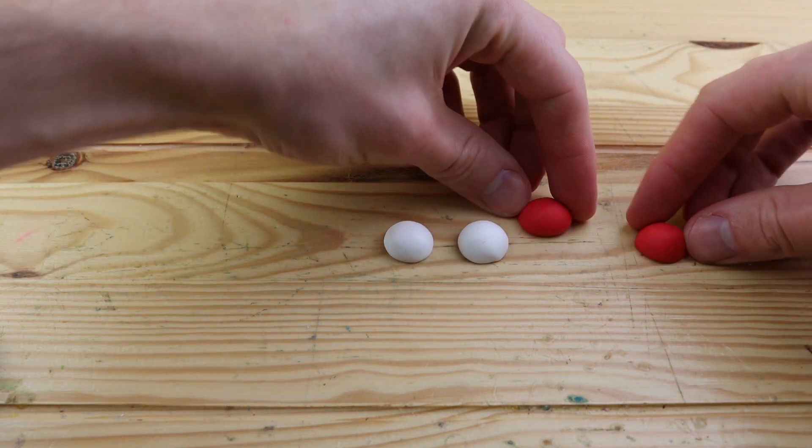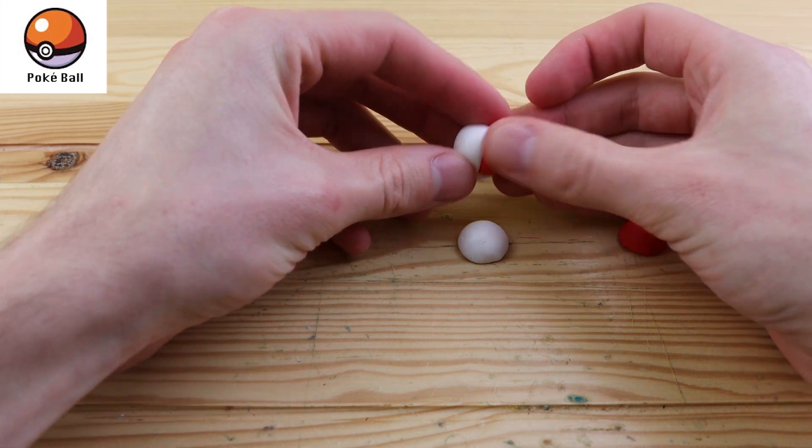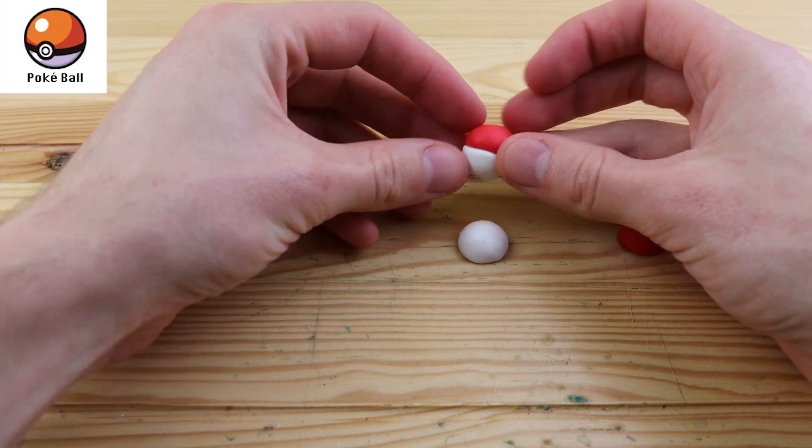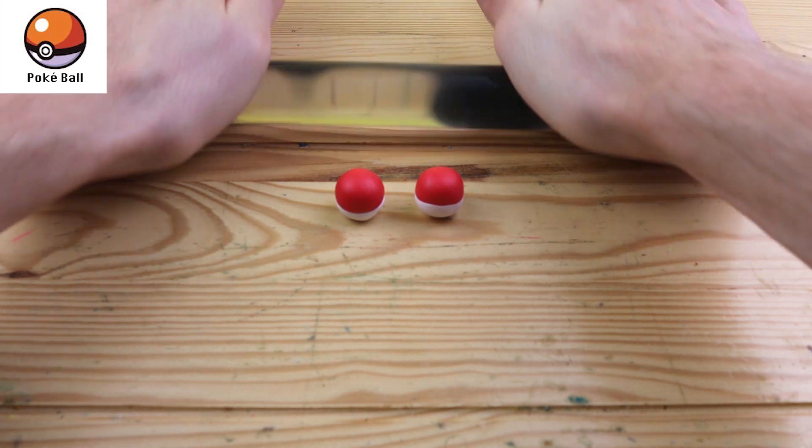So to create these, I'm using a ball of white clay and a ball of red clay. I cut them in half and place the two halves together, and hopefully this will make a nice Pokéball.